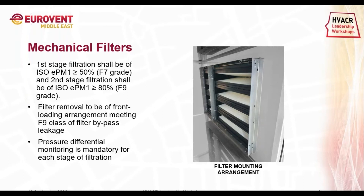Mechanical filters: filter classes shall be in accordance with DIN and ISO 16890 standard. The first stage of filtration shall be ISO ePM1 greater than or equal to 50%, also called F7 grade. The second stage shall be ISO ePM1 greater than or equal to 80%, known as F9 grade. The third stage should be HEPA filter, minimum H13. As per hygienic standards, rooms are classified as Class 1 or Class 2 depending on hospital areas. For Class 2 rooms, two-stage filtration is required; for Class 1 rooms, three-stage filtration is mandatory.